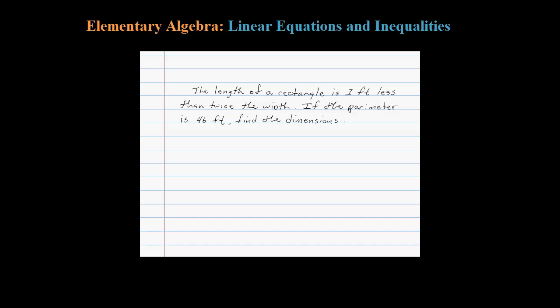Here it says the length of a rectangle is one foot less than twice the width. If the perimeter is 46 feet, find the dimensions. Now whenever I have a geometry problem, I like to draw a picture.